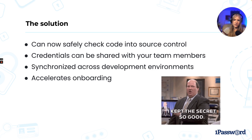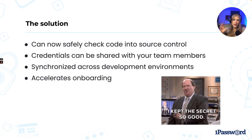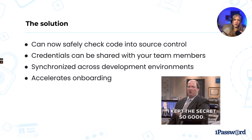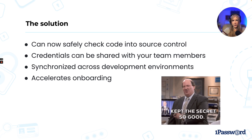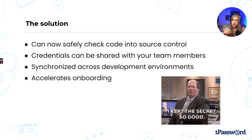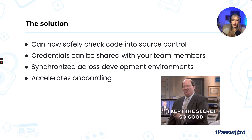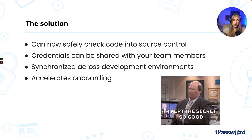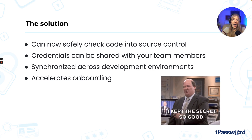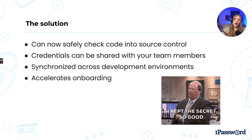Now that we've removed secret values from our code, we can safely check in our environment file into source control so that everyone on our team can use the same credentials without risking sensitive data. No more worrying about whether you've added your environment files to .gitignore — when using secret references, you should push up your environment files. With 1Password, we can share access to credentials with other team members, and any changes made to credentials will be immediately available to everyone on your team.